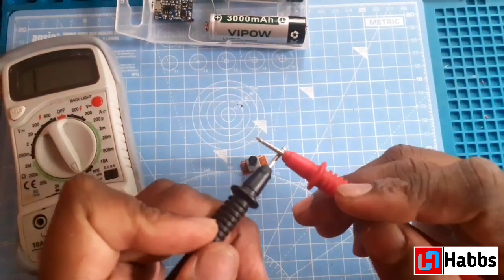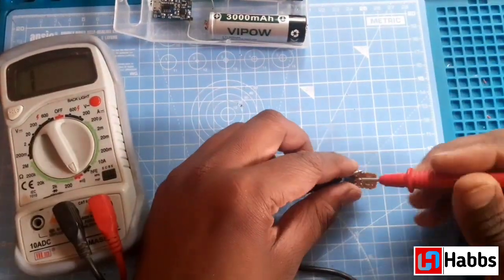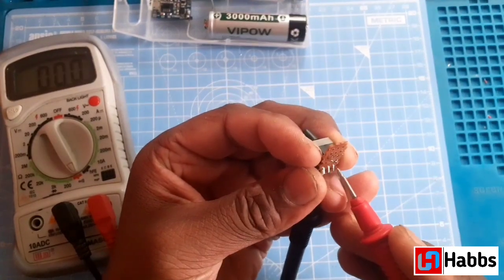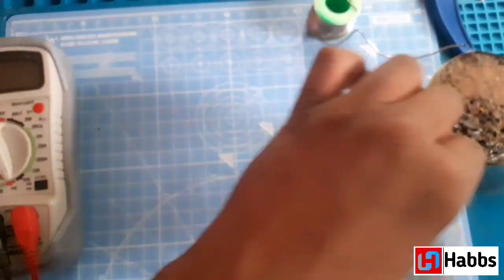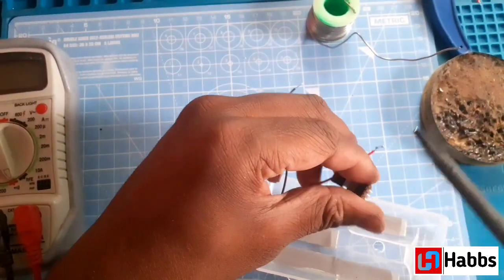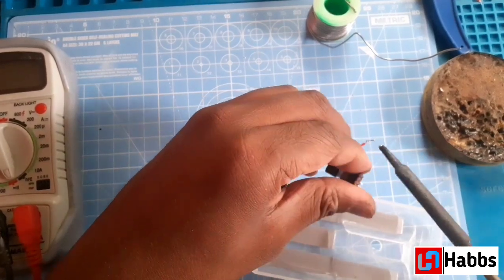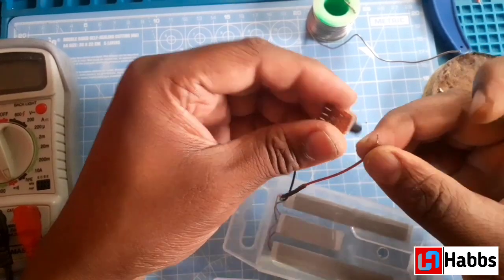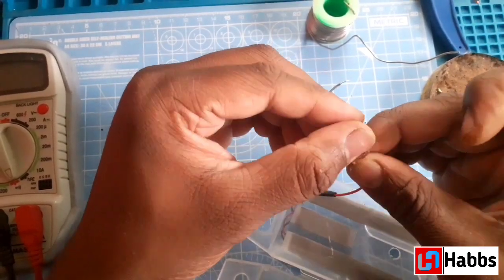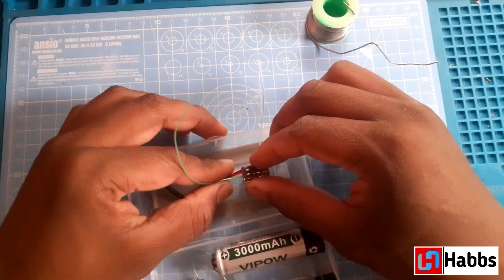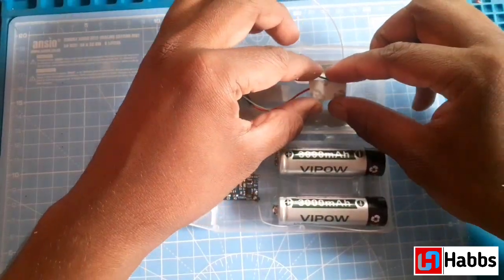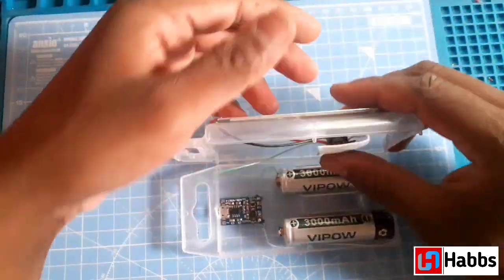Using a multimeter we need to find 4 terminals which gives us the continuity. So when the switch is on two terminals should pass the positive current and the remaining two should pass the negative current. After finding the respective terminals we will connect the positive LED wire to the positive terminal of the switch, and similarly the negative wire from the LED to the negative terminal of switch. Using a double sided tape we will stick the switch to the box.